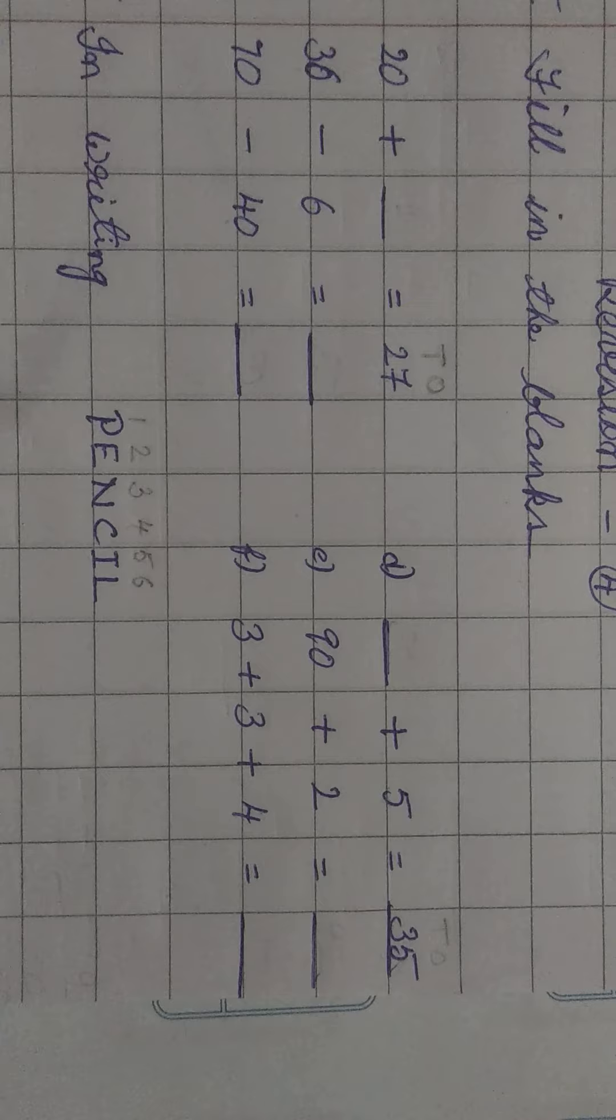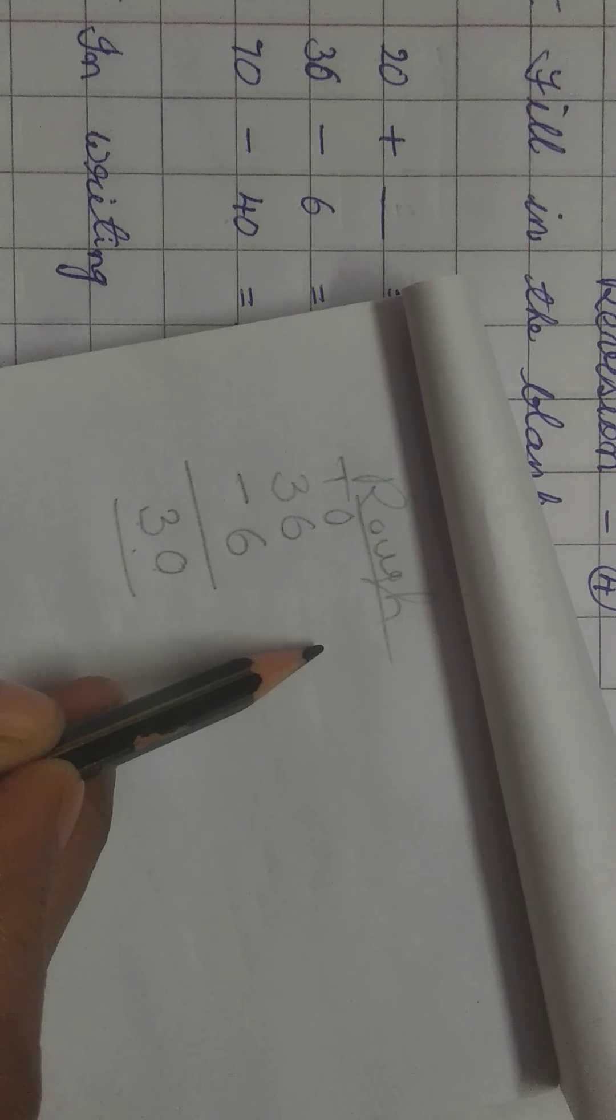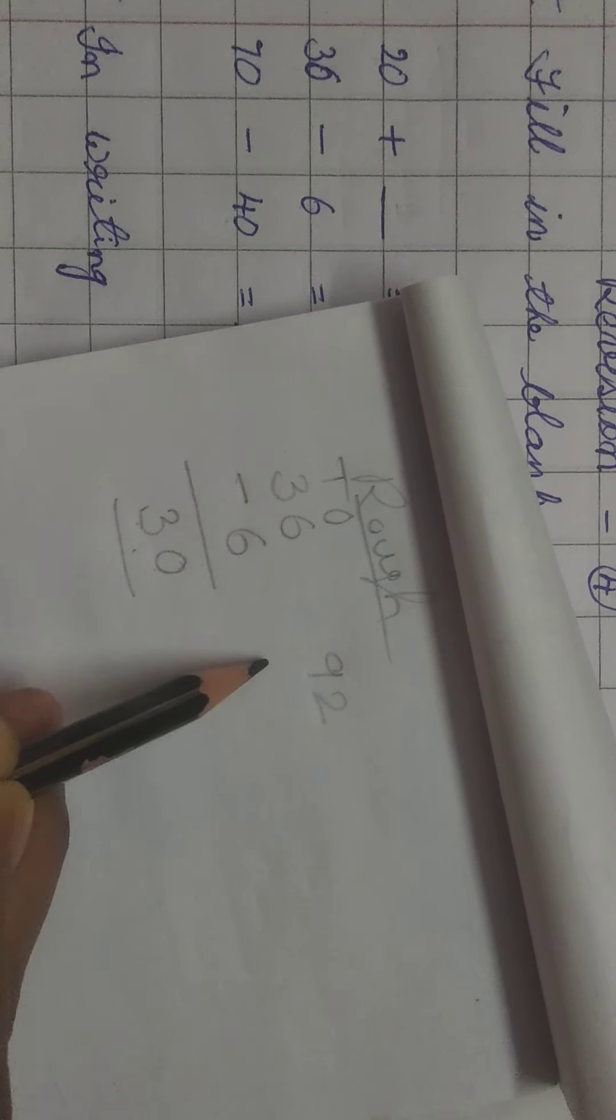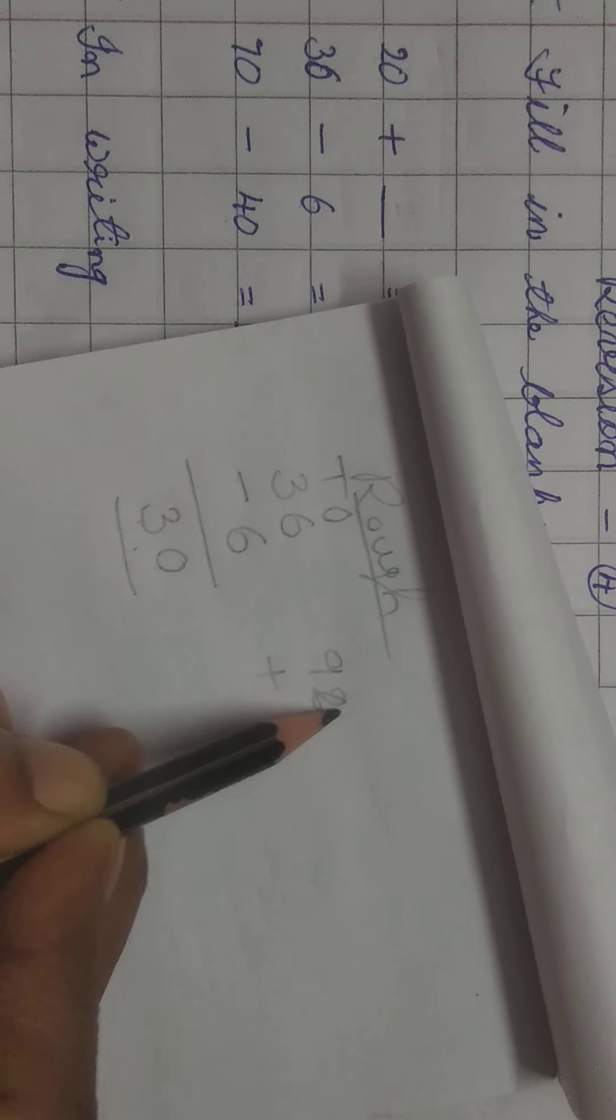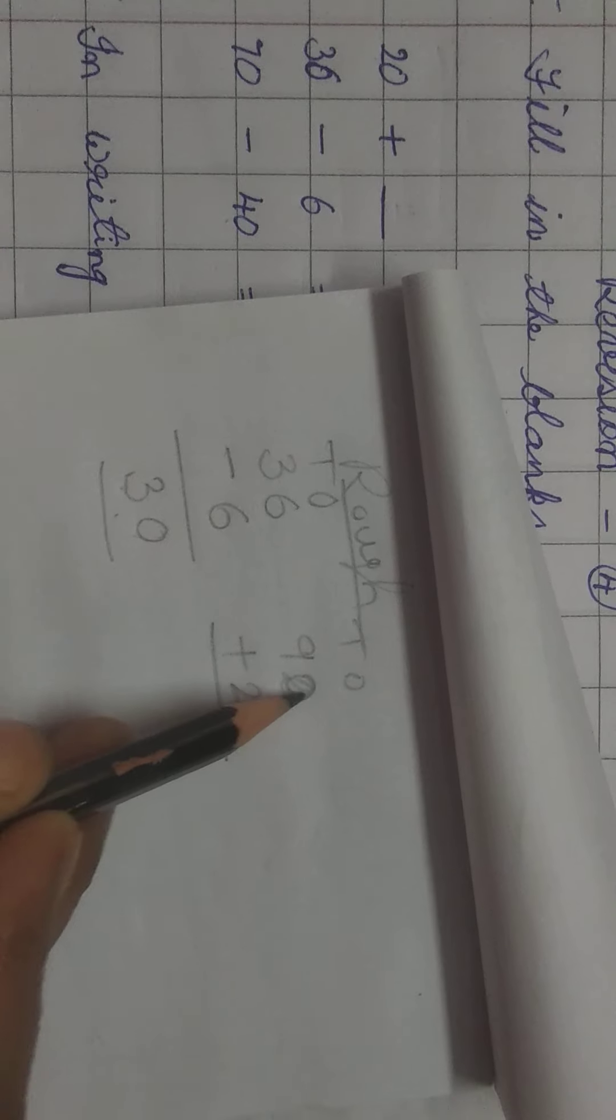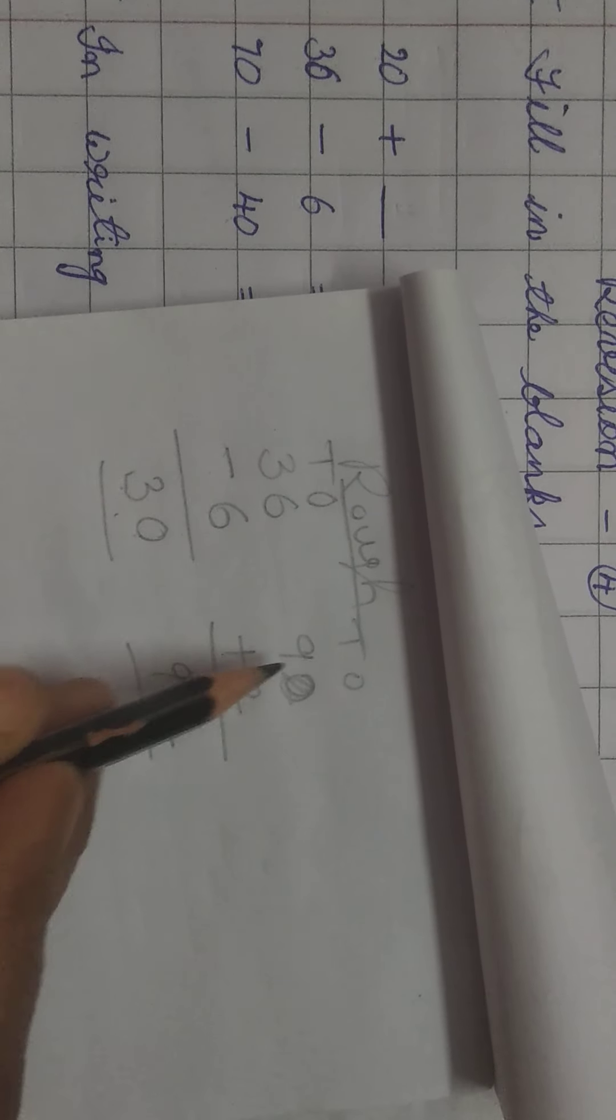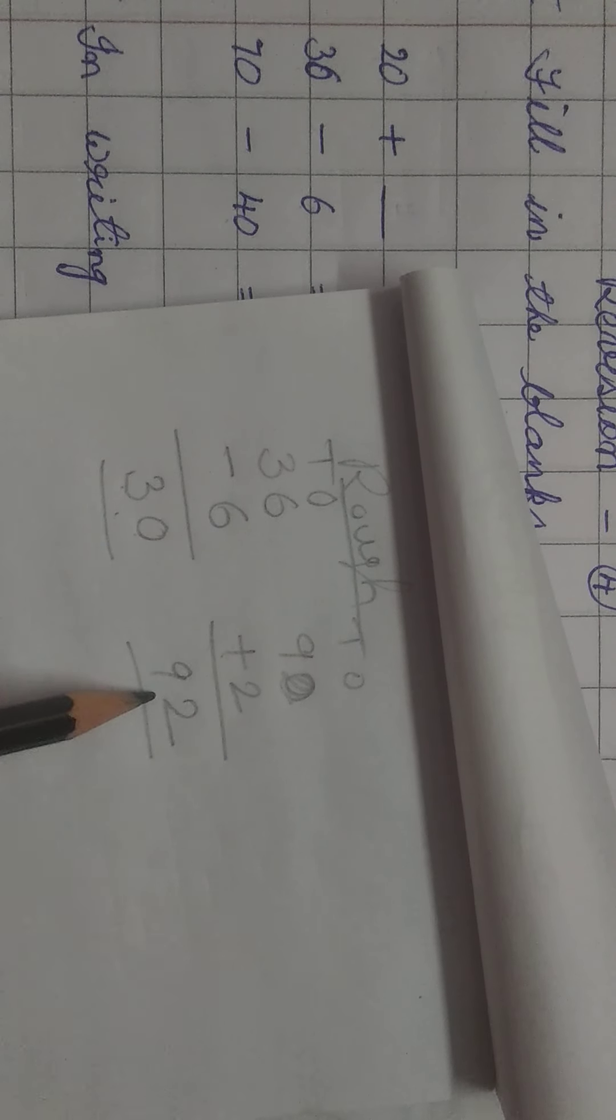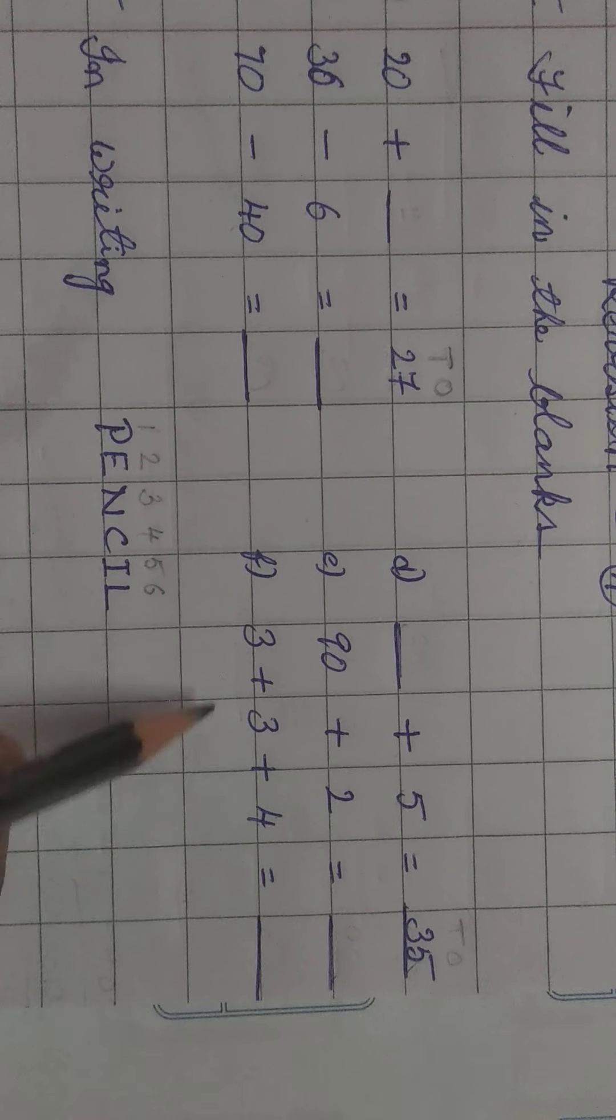Next, 90 plus 2. 90 plus 2 bhi same, is number jaisa hi kaisa karengi? Same bilkul vaisa hi karengi. 90 plus 2. Ones place and tens place. After that, 2 plus 0, plus 2 is equal to 2. 9 ke niche koi number nahi diya gaya. So 92 is the answer.